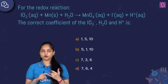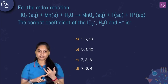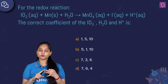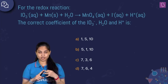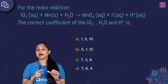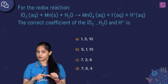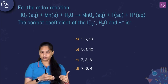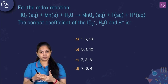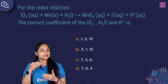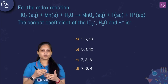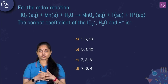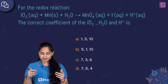First I'll identify the reduction and oxidation half reactions, then the oxidizing and reducing agents, then the n-factor of each. Then I'll cross-multiply the n-factors, balance atoms other than hydrogen and oxygen, balance oxygen by adding H₂O molecules to the oxygen-deficient side, and balance hydrogen by adding H⁺ ions to the hydrogen-deficient side. Afterwards I'll balance the charges.